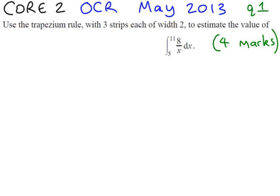Anytime you're given a trapezium rule question, you will be told in the question how many strips you need to use. It might leave you to figure out the width of each strip, but in this case, it's been kind to you and told you that each strip has width of 2.